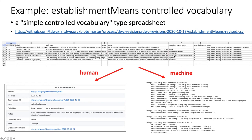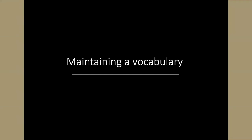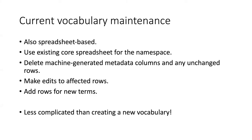Once the spreadsheet is created and run through the script, the information in the spreadsheet gets transformed into human-readable documents and machine-readable metadata, both following the form of the standards documentation specification. The process of maintaining a vocabulary is similar — it is also spreadsheet based. However, it uses one of the existing core spreadsheets in the rs.tdwg.org repository as a starting point.